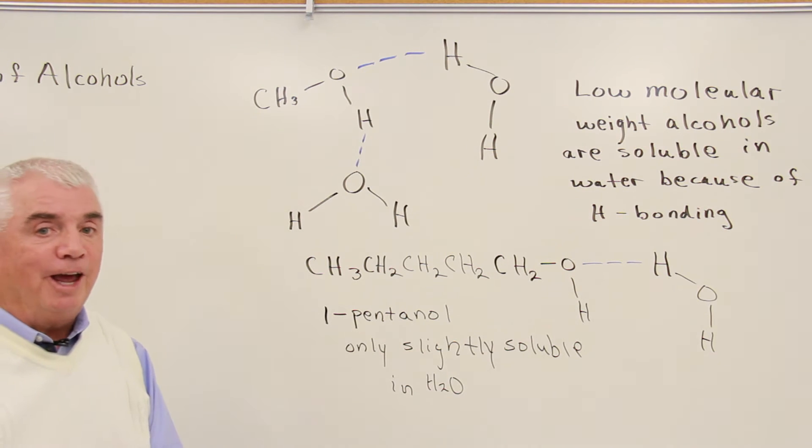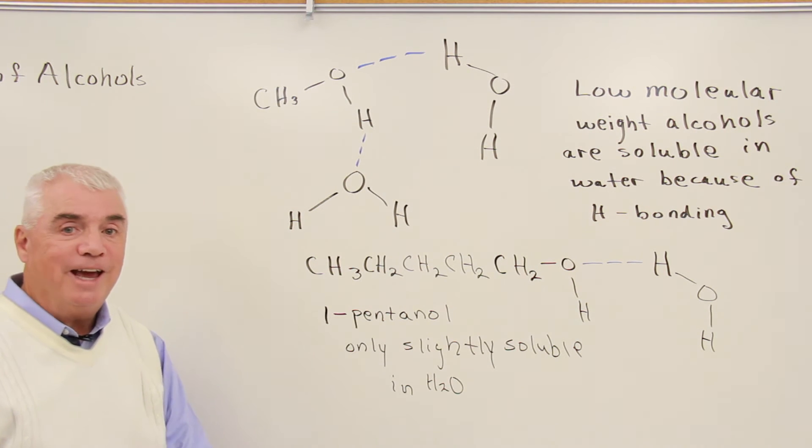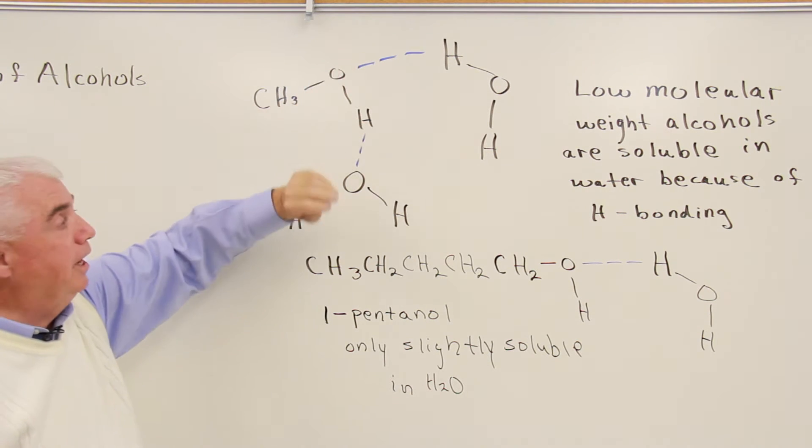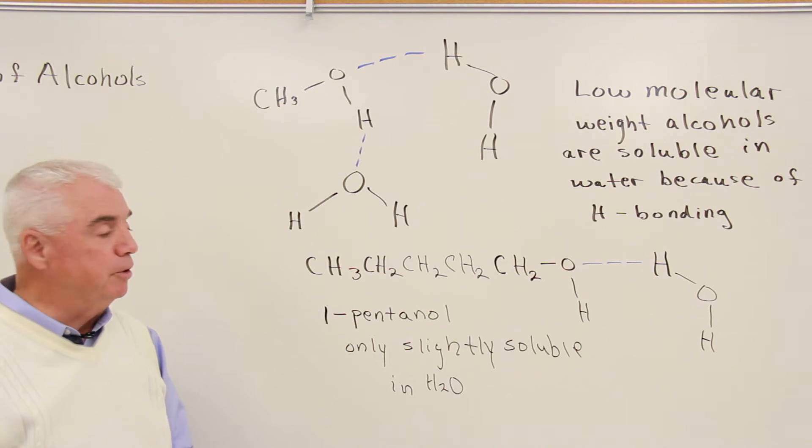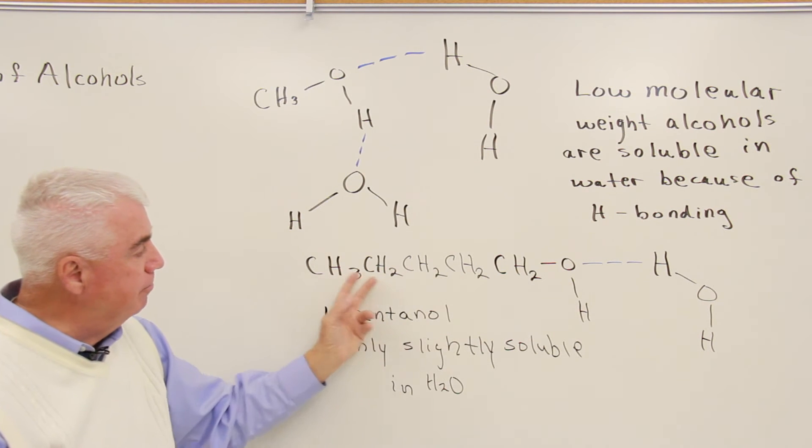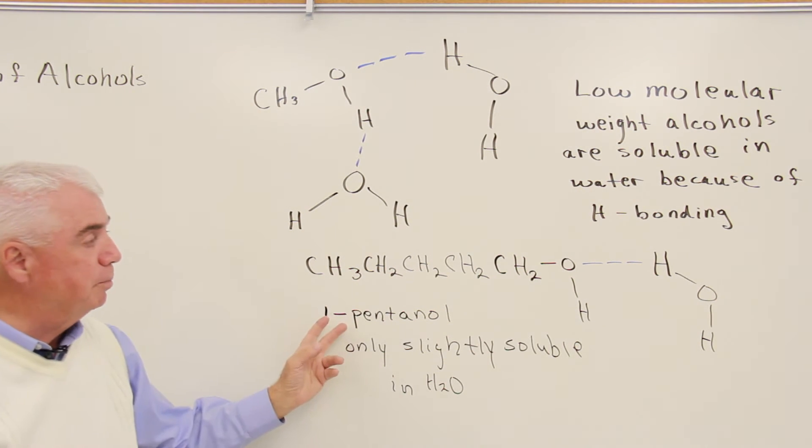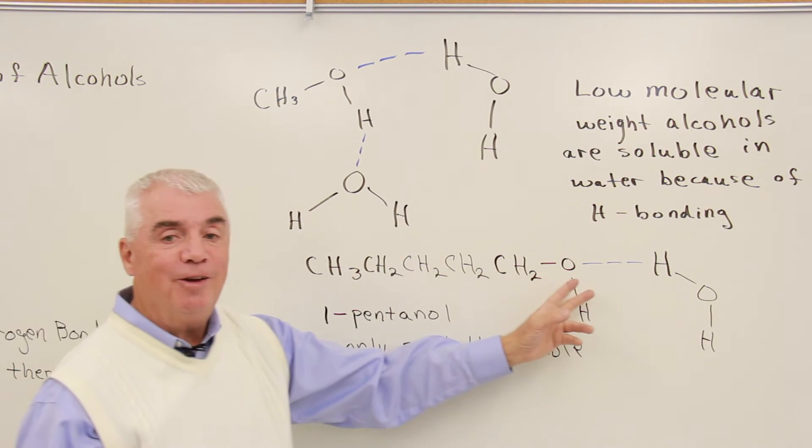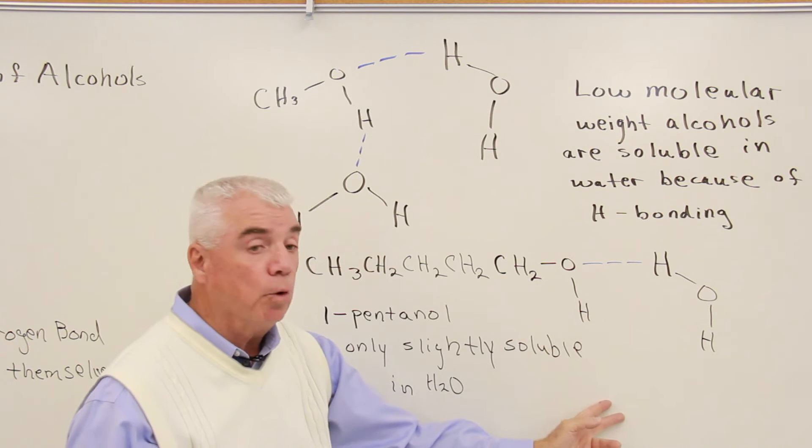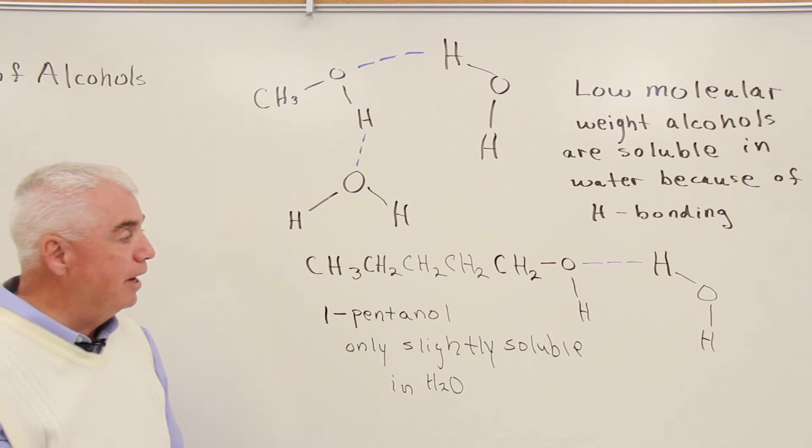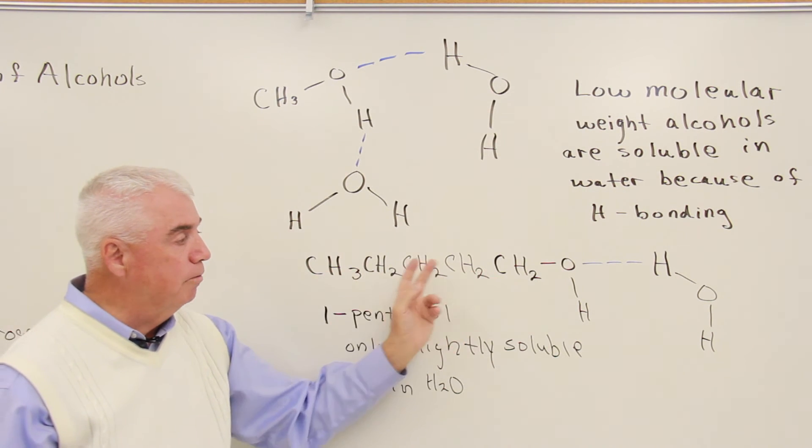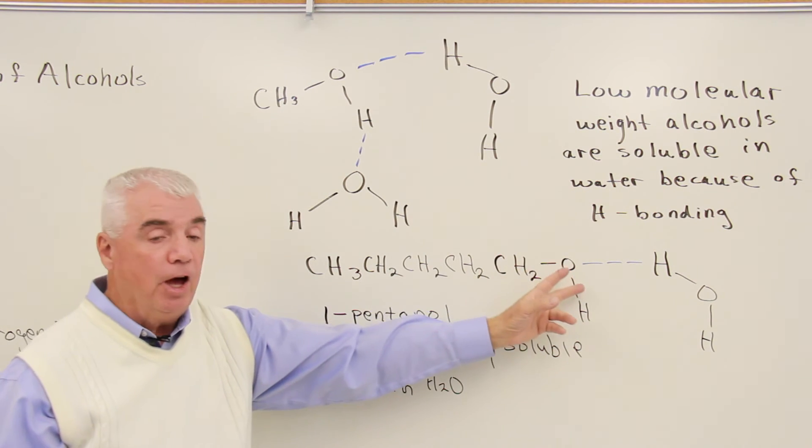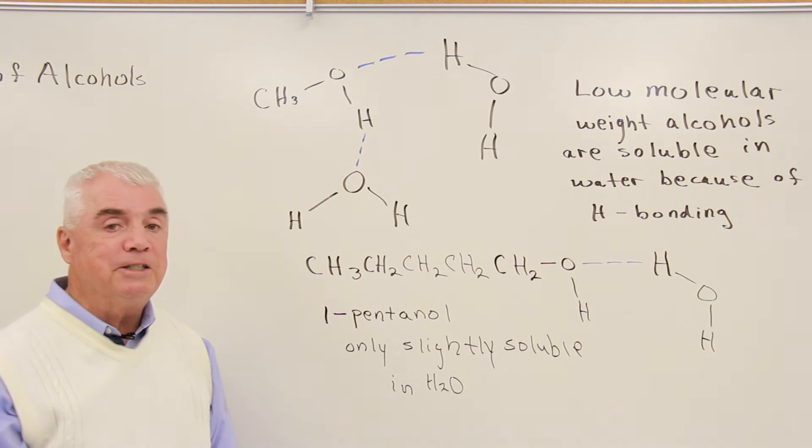If we increase the chain length now, we start to have a combination of two properties. The polar OH that can hydrogen bond, and then the alkane-like chain that can't hydrogen bond. If we get up to something here, I've got five carbons with an OH on the end, would be one-pentanol. It can still hydrogen bond with water. We could have another water molecule here as well, hydrogen bonding to the alcohol. But the properties now of this alkane structure start to outweigh the properties or the effect of the hydrogen bonding. And we find that one-pentanol is only slightly soluble in water.